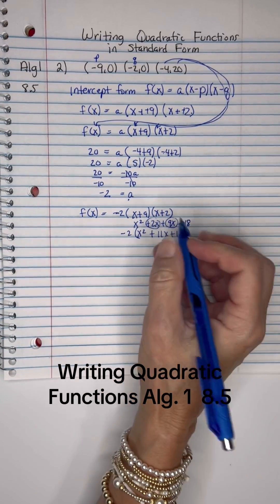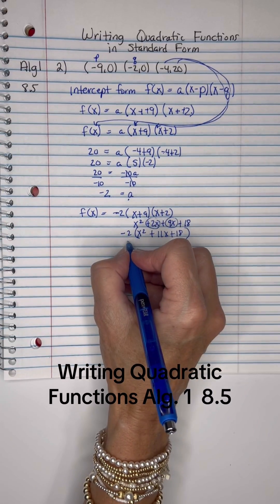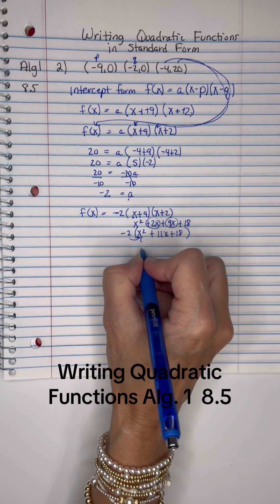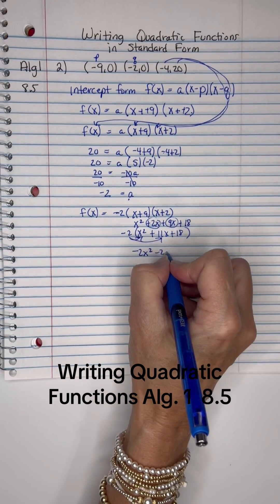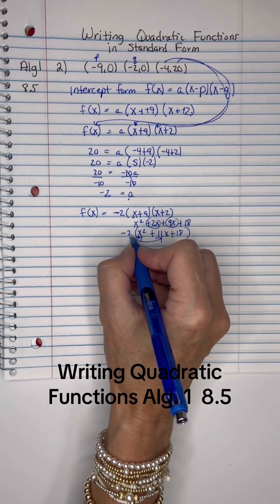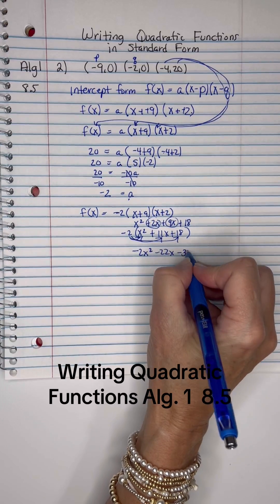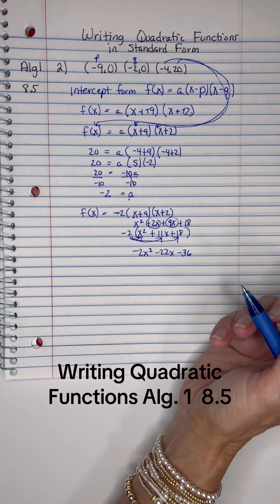And remember all that has to be multiplied by negative 2 by distribution. So I have negative 2x squared minus 22x minus 36. And there you go.